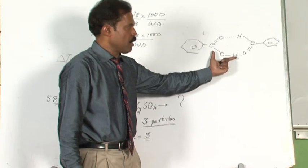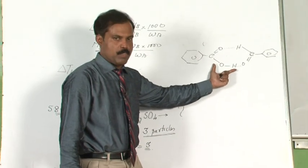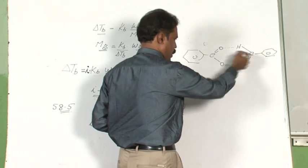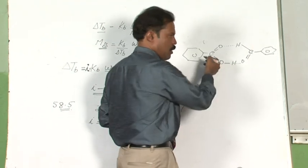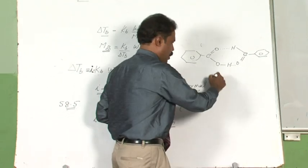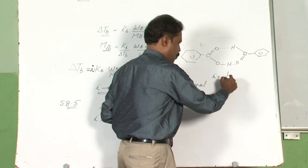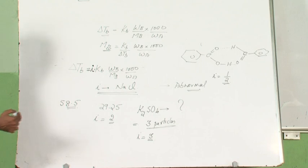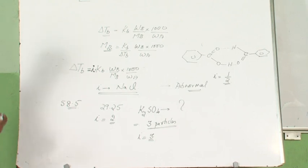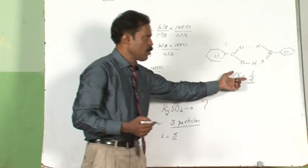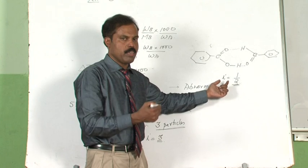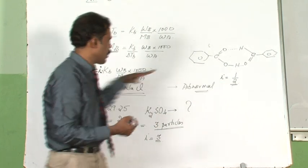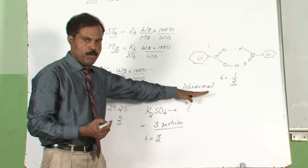What will be the value of i when association takes place? It has to be less than 1, since here two particles come together to form a single particle. Your i value has to be half, because the molecular weight you get is double the actual molecular weight. So the Van't Hoff factor is the correction factor which removes the abnormality.